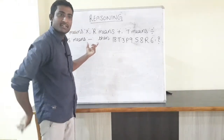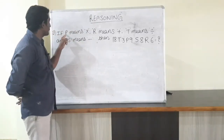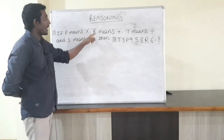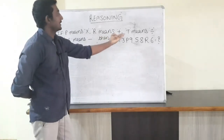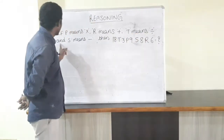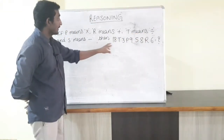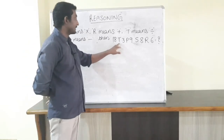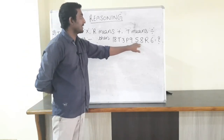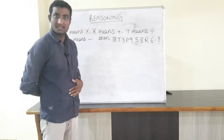The next question from Symbols and Notations is: if P means into, R means plus, T means divided by, and S means minus, then what is 8 T 3 P 9 S 8 R 6 equal to?